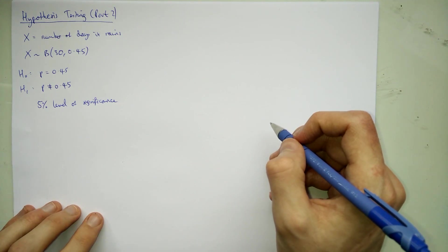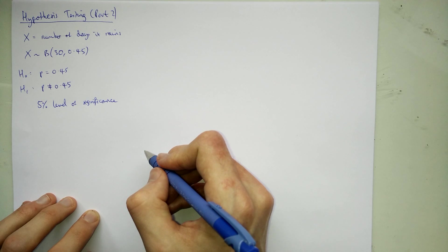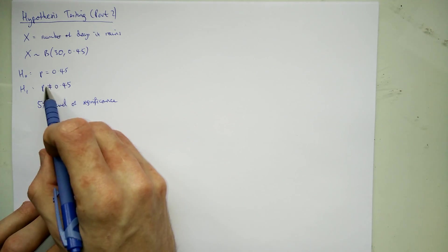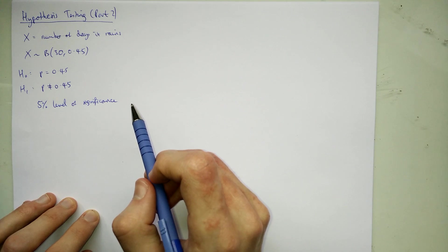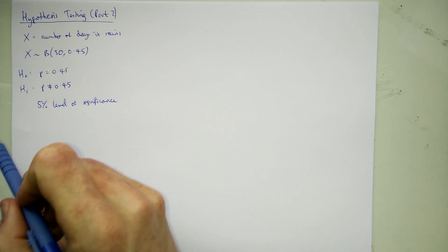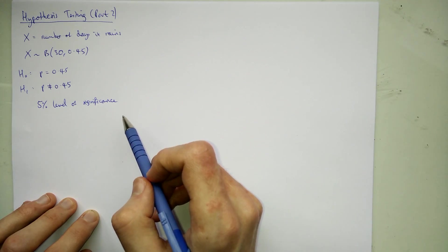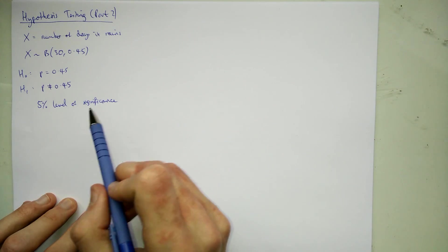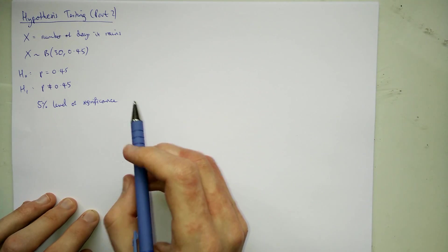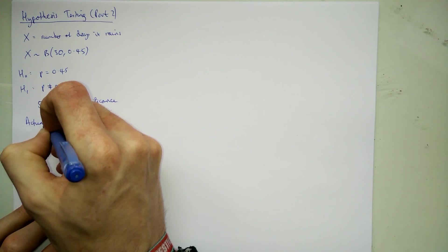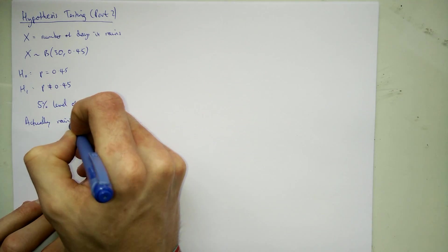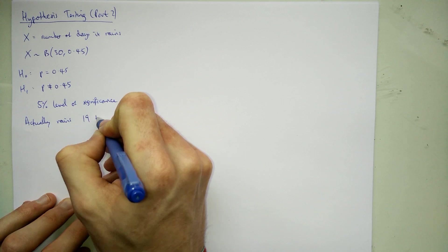Okay so this is different than last time because last time we just looked at one way or the other depending on what this sign said. If it was bigger than we looked for the probability of being bigger than a certain number, or if it was less than we looked for the probability of being less than a certain number. And now we've got not equal to, we've got to deal with both cases bigger than and smaller than. Let's say it actually rains 19 times in that month.